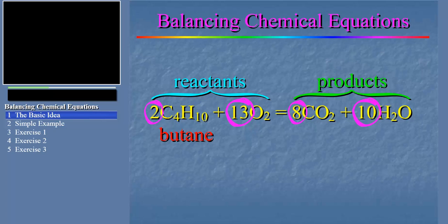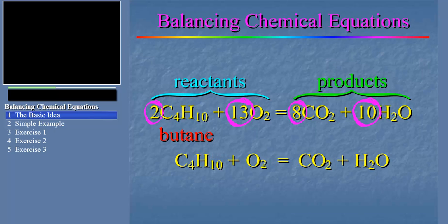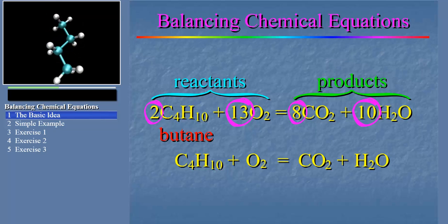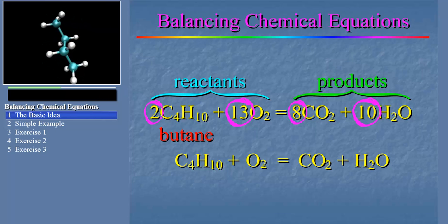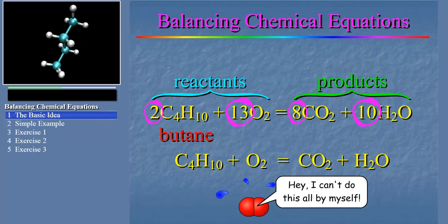We have to do this because, in a chemical reaction, the atoms in the reactant species are rearranging into new combinations, and it often takes more than one of each species to provide all the atoms needed. For example, in the combustion of butane, it wouldn't work to write one butane plus one oxygen produces one CO2 and one water. There are four carbon atoms in butane, all of which have to be converted to CO2, and that's going to require a lot more oxygen than just one O2 molecule. The balanced reaction shows how many of each species are needed.